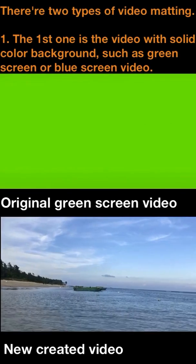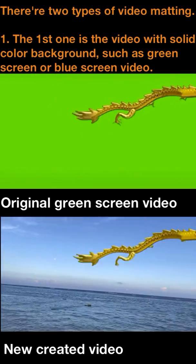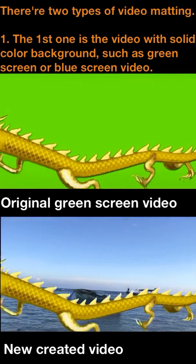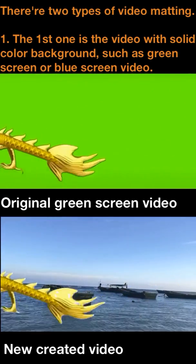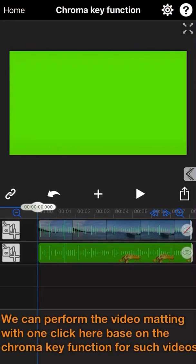As we know, there are two types of video matting. The first one is the video with solid color background, such as green screen or blue screen video.